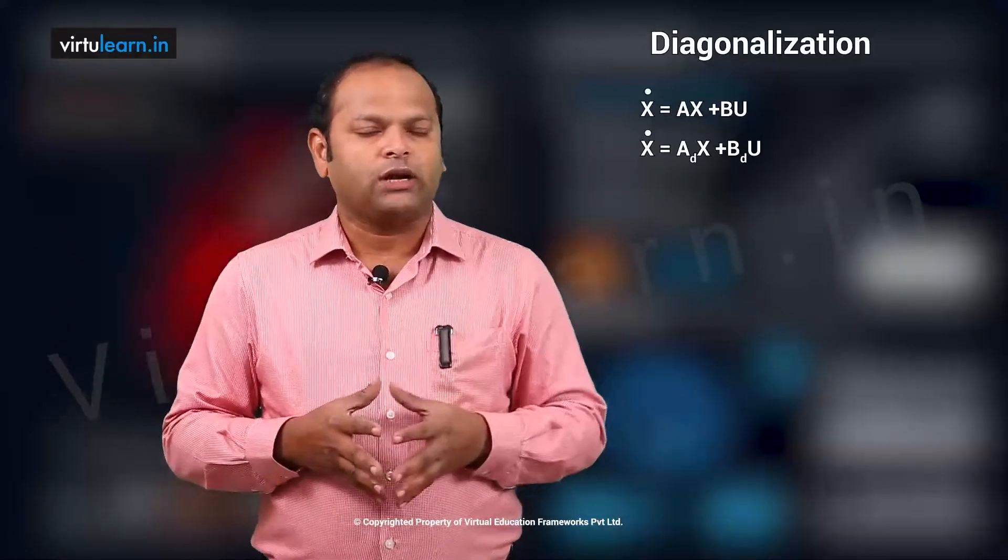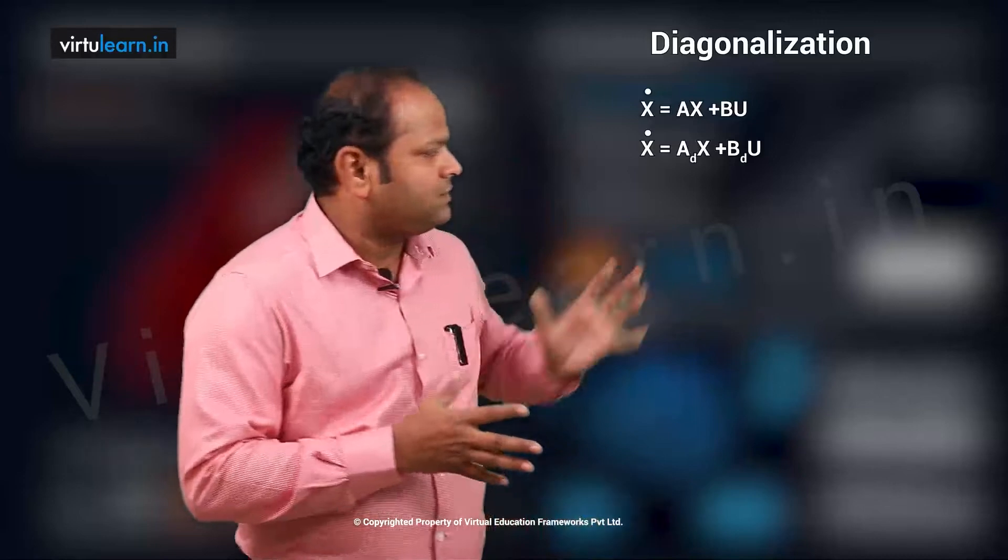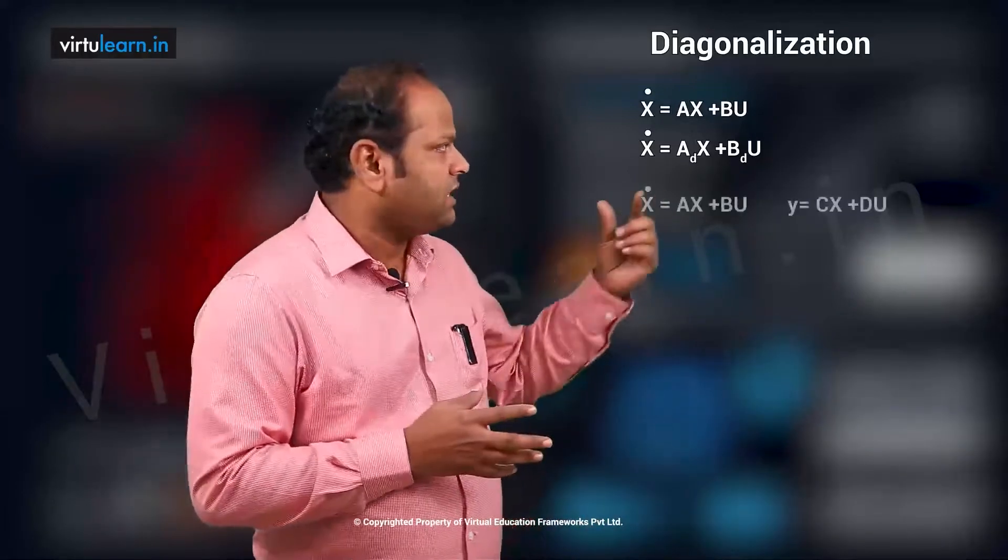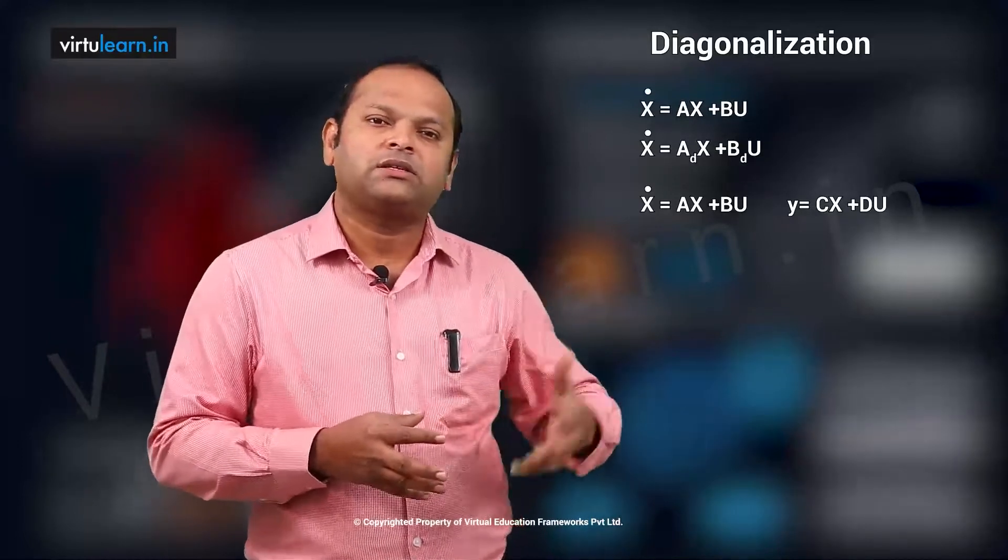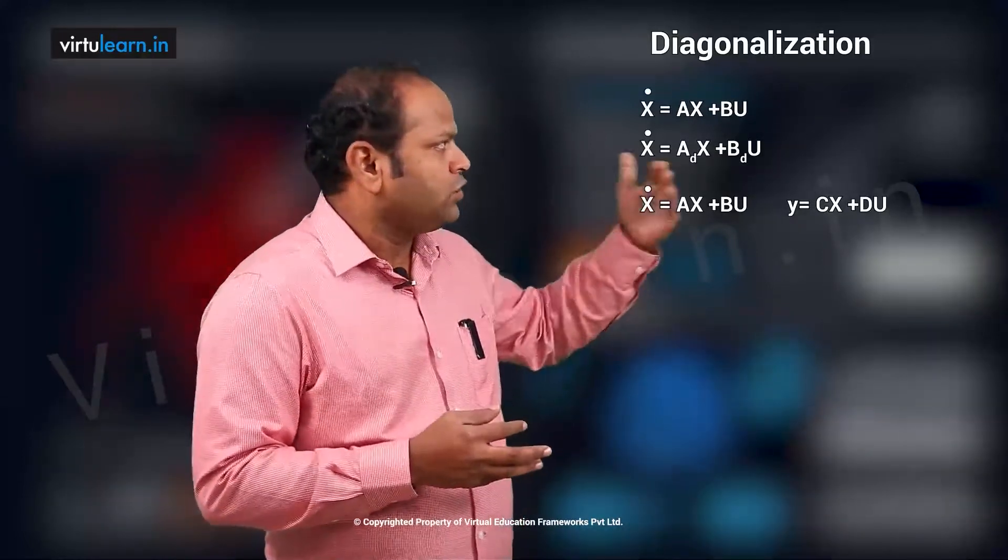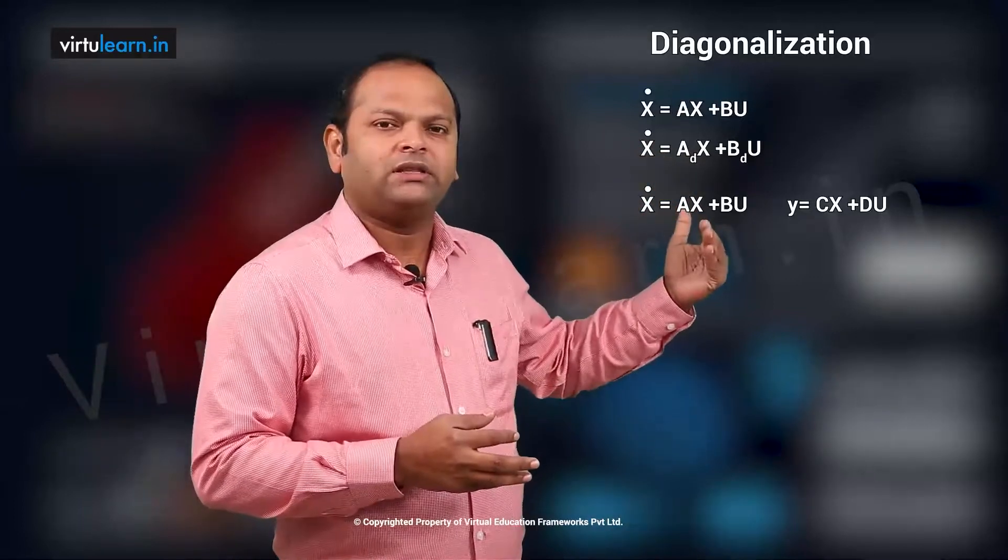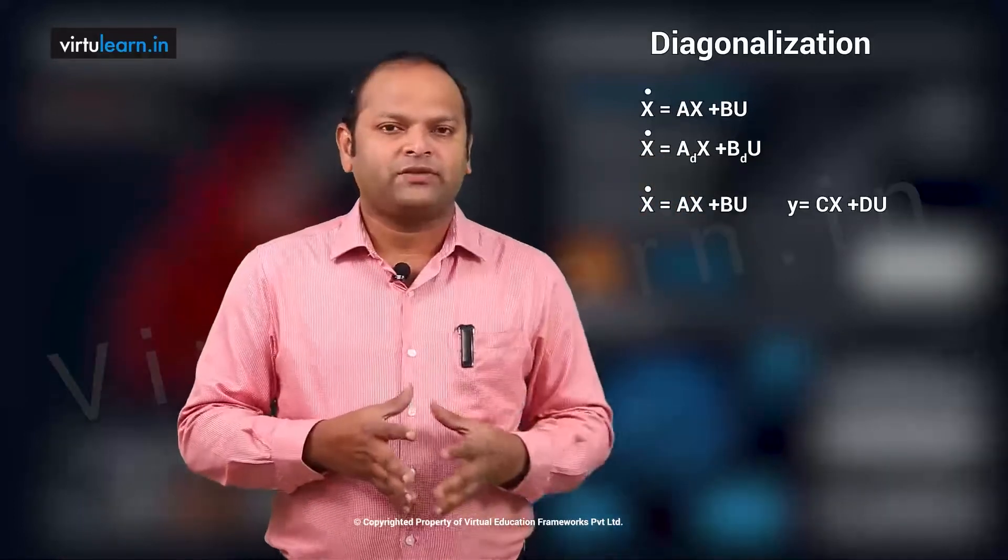Now let us see how to do that. So consider the state space model x dot is ax plus bu and y is cx plus du. We know that a, b, c, d matrices are the system model matrices. So if you know the values of a, b, c, d that represents the dynamics of the system.